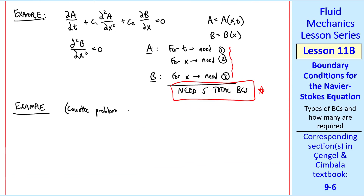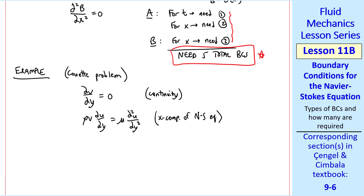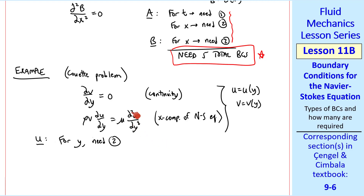Let's use the Couette problem, which we discussed in a previous lesson. The continuity equation reduces to del v del y equals zero, and the x-component of the Navier-Stokes equation reduces to rho v del u del y equal mu del squared u del y squared. Following our statement above, u is only a function of y and v is only a function of y. So for variable u, for y, we need two boundary conditions since this is second order. We have a del u del y term, but we don't worry about that one since we're counting the second order derivative as the highest.